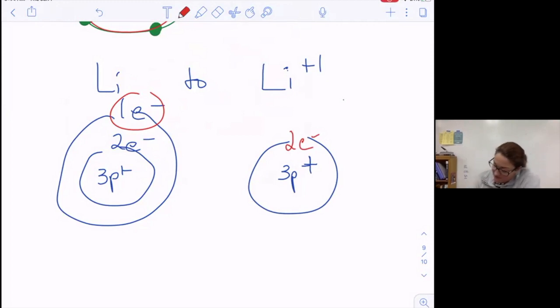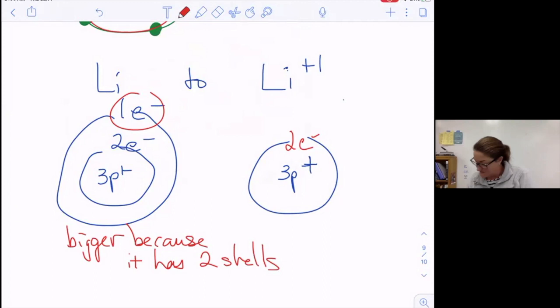So now rather than having two shells of electrons, it only has one shell of electrons. So clearly this one's going to be bigger because it has two occupied shells of electrons versus one occupied shell of electrons.